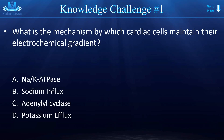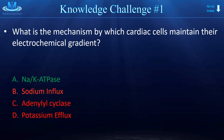Knowledge challenge number one: What is the mechanism by which cardiac cells maintain their electrochemical gradient? The answer is A — the sodium-potassium ATPase, or sodium-potassium pump, which pumps three sodium ions out for every two potassium ions it pumps in, at the cost of ATP. Options B and D are wrong because the directions of ion movement were stated incorrectly. Option C is also not correct because that's an enzyme that converts ATP into cyclic AMP, which isn't important in this particular mechanism.